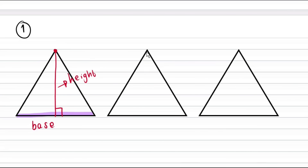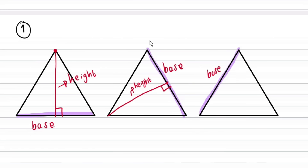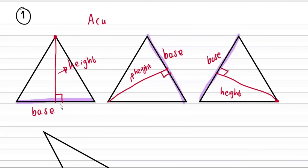In the second diagram, this is the exact same triangle. If we took a different side as the base, then to measure the height we go from the ground to the highest point of the triangle, and this height must be perpendicular to the base. Similarly, in the third diagram, if we took another side as the base, the highest point changes, and we go from the highest point down to the base, always ensuring the line is perpendicular to the base.